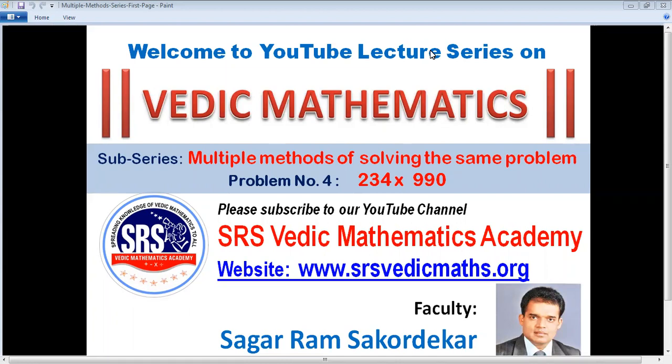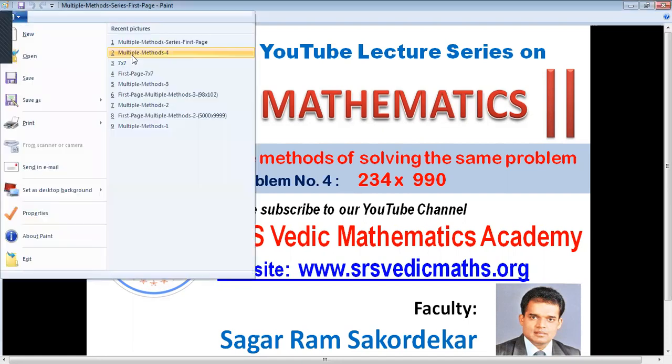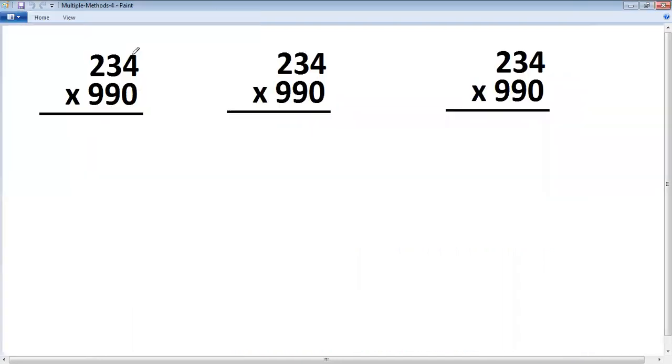234 multiplied by 990. Let's learn how to solve this 234 multiplied by 990 in three different methods.